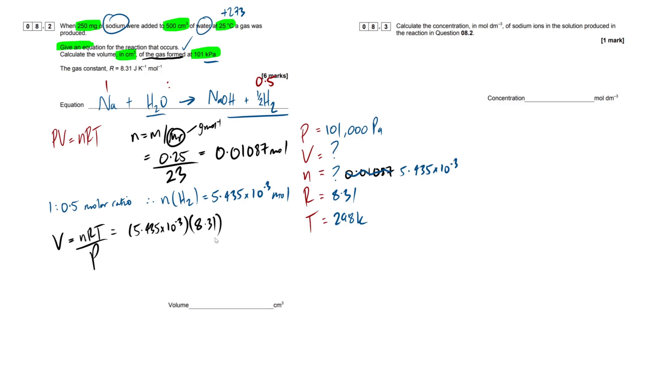So that's going to be V equals NRT over P. Easy as that, guys. So let's just bracket this all up, put this in our calculator. So we'd have 5.435 times 10 to the minus 3, multiplied by our gas constant, 8.31, multiplied by our temperature, which is 298, and then all divided by our pressure, which is just 101,000.